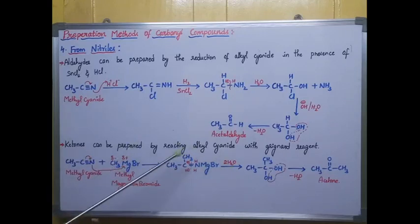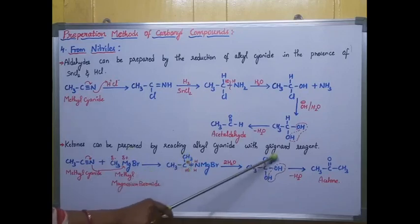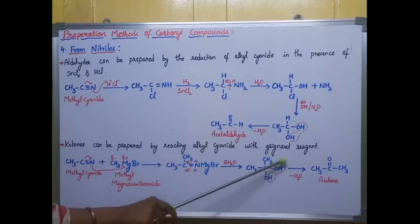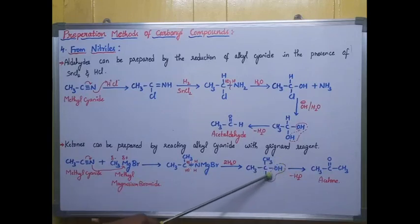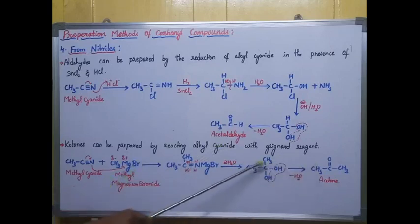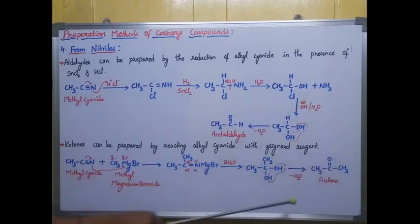Next, I add two water molecules: hydrogens go to one side and OH groups to the other, breaking the double bond. Two OH groups attach to the carbon, and MgBr comes out as a byproduct. Removing a water molecule from the two OH groups gives acetone (CH3COCH3) as a product. This is the method for preparing ketones from nitriles.